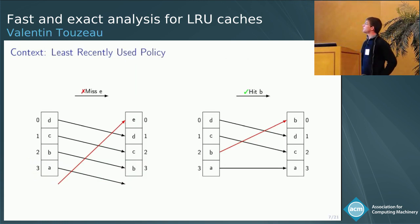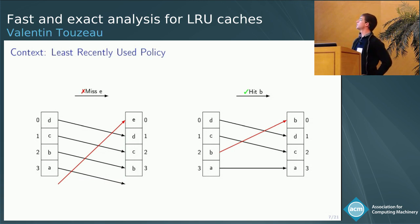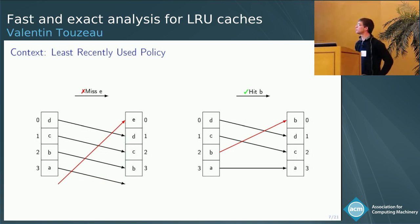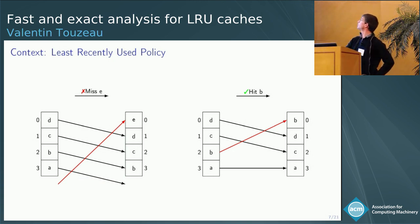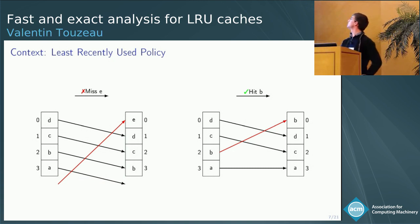LRU works by keeping blocks sorted from the most recently used (index 0) to the least recently used (index 3), and maintaining this order on each access. For example, if you access block E which is not cached, you put it at the most recently used position, every other block shifts by one logical position, and the last one — A, the least recently used — is evicted. In case of a hit, you also put the accessed block at the most recently used position and shift those that were accessed more recently.